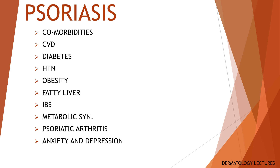Psoriasis is associated with cardiovascular disease, diabetes, hypertension, obesity, fatty liver, inflammatory bowel disease, metabolic syndrome, psoriatic arthritis, and anxiety and depression. It is recommended that all people with psoriasis are screened for obesity, hypertension, hyperlipidemia, and diabetes at first presentation, and cardiovascular risk is assessed every 5 years thereafter. Baseline and annual screening for arthritis and anxiety and depression is recommended. Psoriasis is exacerbated by smoking and alcohol consumption; people with psoriasis should be asked about alcohol and smoking at presentation, and screening should be repeated annually.